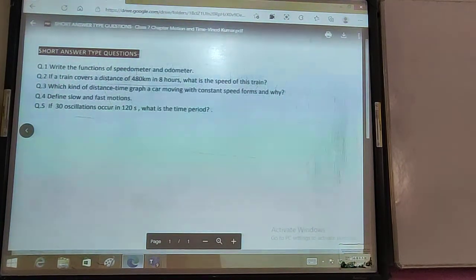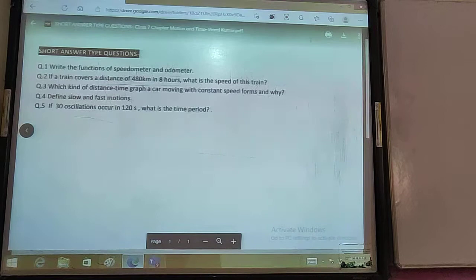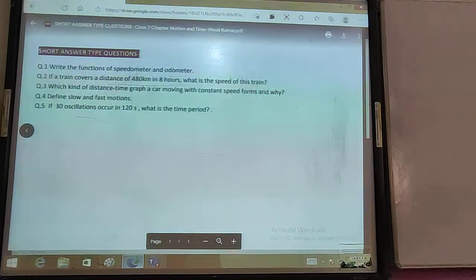If 30 oscillations occur in 120 seconds, what is the time period? If 120 seconds is 30, then how much is it? 4 seconds.